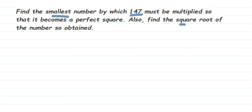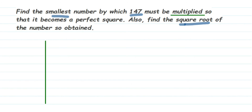They're asking two questions here. Whenever they ask you to find the smallest number or least number to be multiplied or divided, we're going to find the prime factorization of this number. We'll use the division method to find the prime factors of 147, and then it'll be easy to find the answer after that.